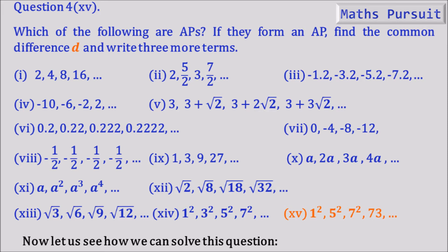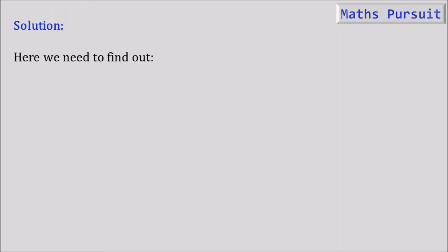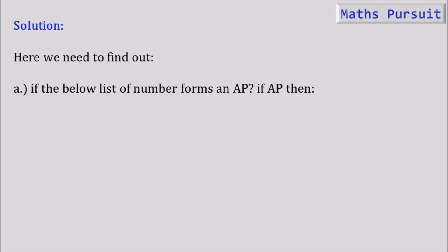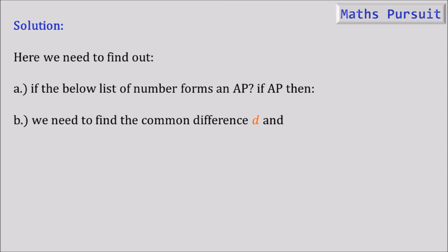Now let's see how we can solve this. We need to find out if the list of numbers forms an AP. If it does, we find the common difference D and the next three terms. To determine this, we need to find the common difference D — once we have it, it will be clear whether the series forms an Arithmetic Progression or not.